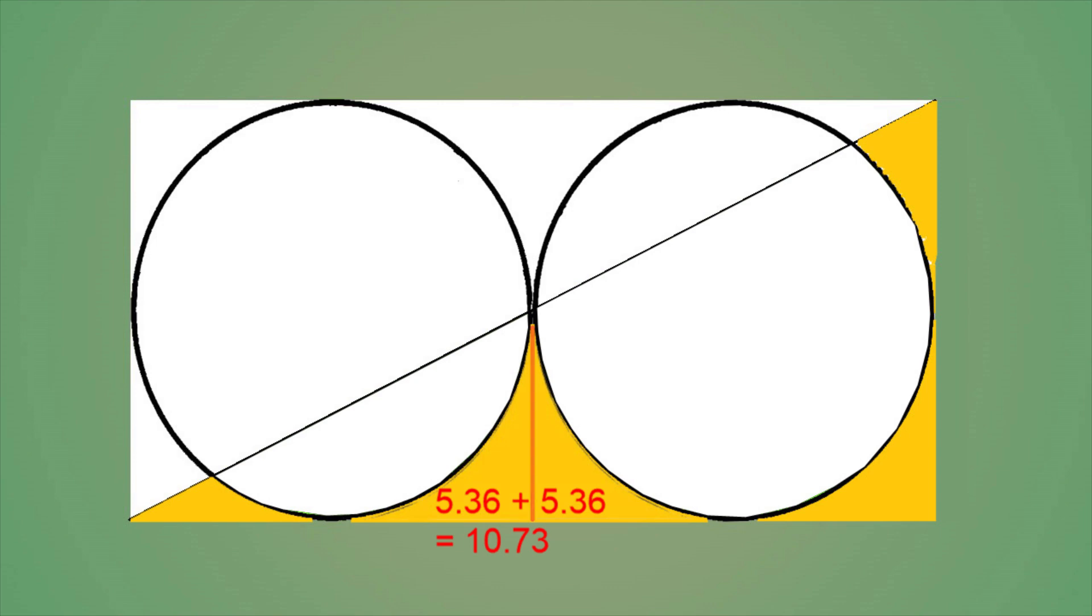Look at this Bermuda-like triangle. It is equally divided into two parts. Since we already calculated the area of the first part, the first half of this Bermuda-like triangle, and since they are equal, multiply that previous calculation by 2. The total area of this Bermuda-like triangle is 10.73.